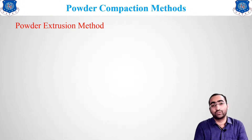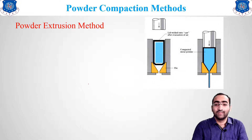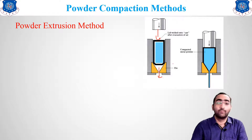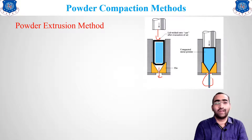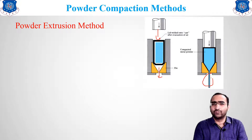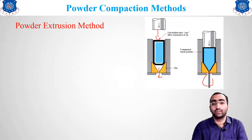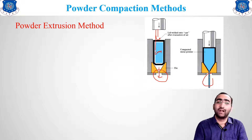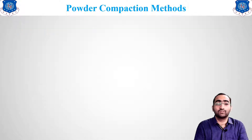The fourth method is powder extrusion. The material is pressed from the back and forced out through an outlet, similar to using a paste tube — applying pressure at the back causes material to come out from the outlet. This method is used to produce long cylindrical parts. Metal is filled in a container, pressure is applied, and the material comes out in the shape of the outlet.